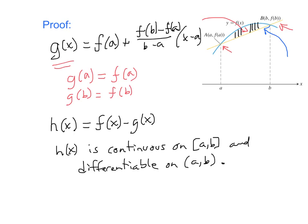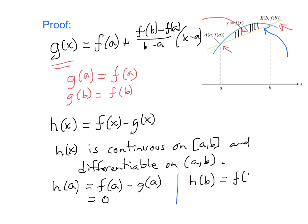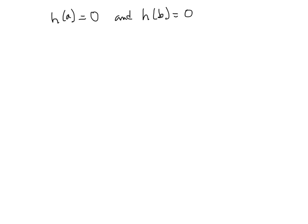Now check this: if we plug a into h, we get h(a) = f(a) - g(a), and since f(a) = g(a), h(a) = 0. Similarly, h(b) = f(b) - g(b), and since those two values are equal, h(b) = 0.